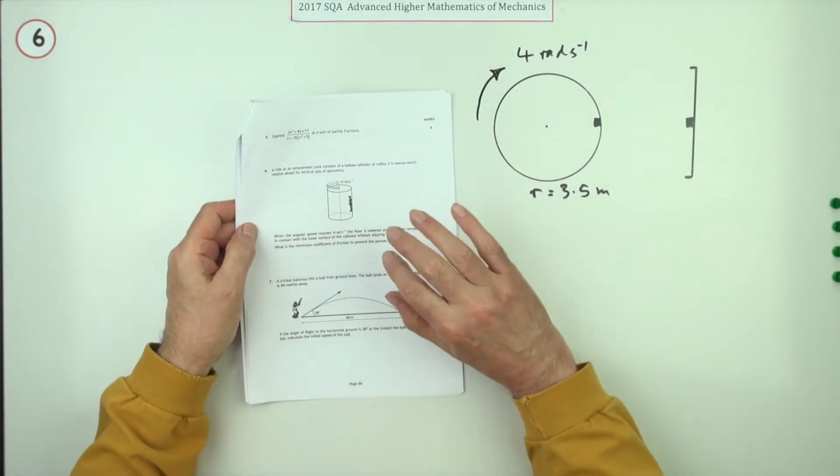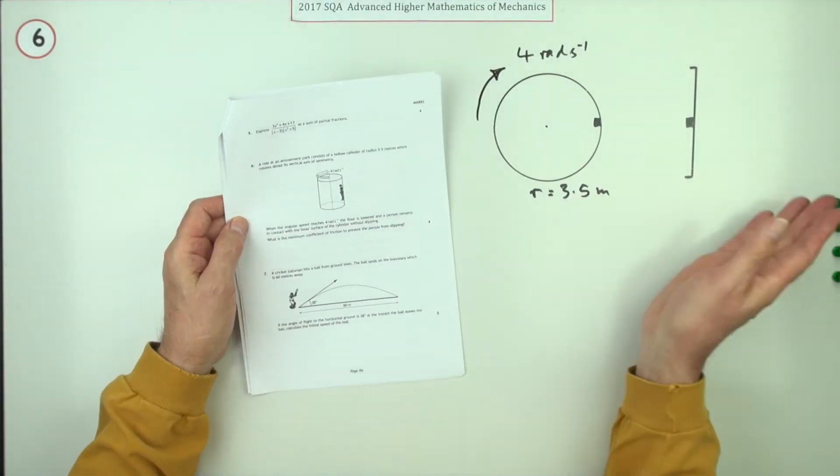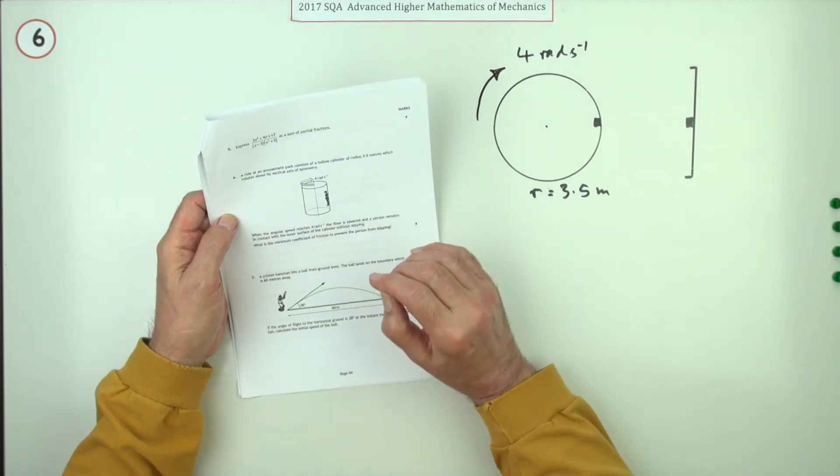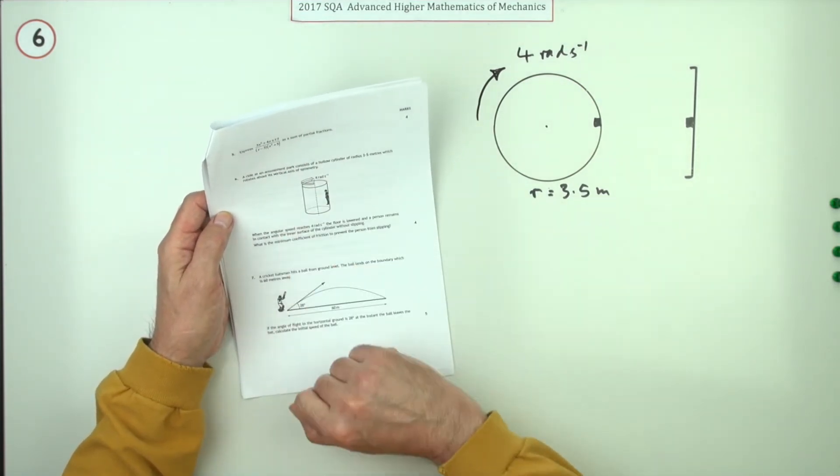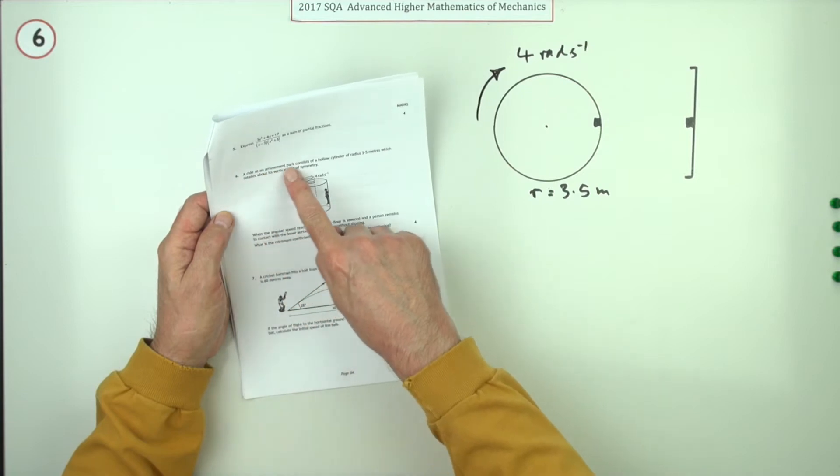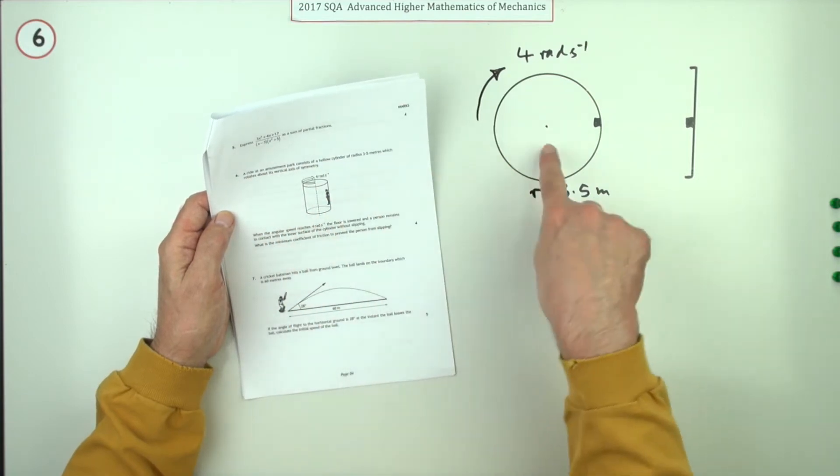Number six from the 2017 mathematics and mechanics - getting another four mark question here on rotational motion. A ride at an amusement park consists of a hollow cylinder, this is looking down the top of it, of radius 3.5 meters which rotates about its vertical axis of symmetry at four radians per second.